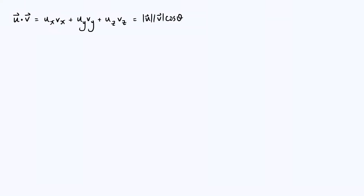Hello everyone. In this video I'm going to prove a couple of important results relating to the dot product, or the scalar product, of two vectors in three-dimensional space. The first result is that the dot product is basis independent — regardless of how you choose your x, y, and z axes in 3D space, you will get the same result. The second part of the video is about proving the equivalence of the two forms of the dot product written at the top.